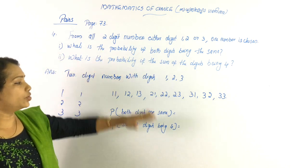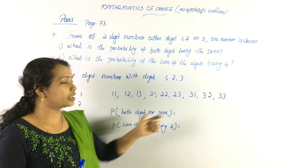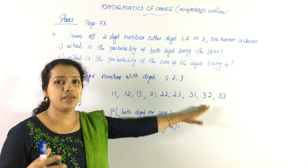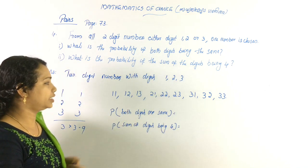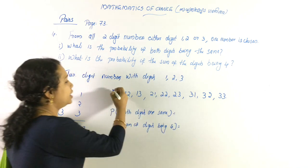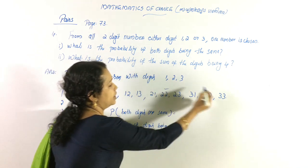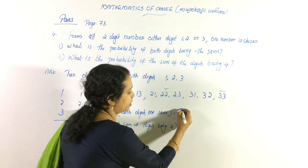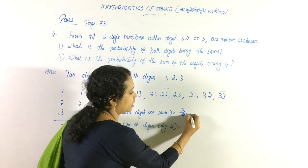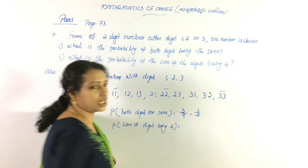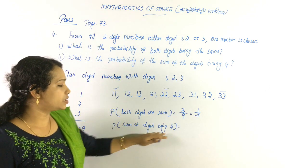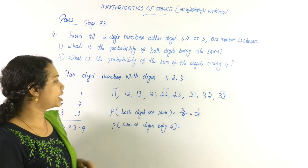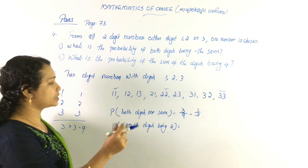Both digits are the same in: 11, 22, and 33 — that is 3 possibilities. So the probability of both digits being the same is 3 by 9, which is 1 by 3.